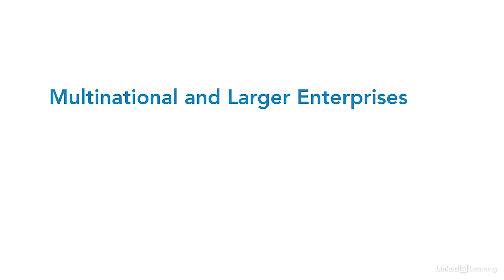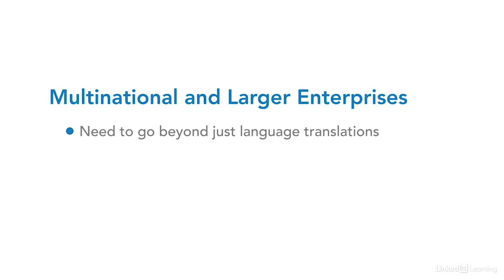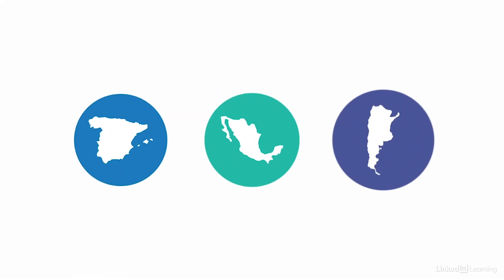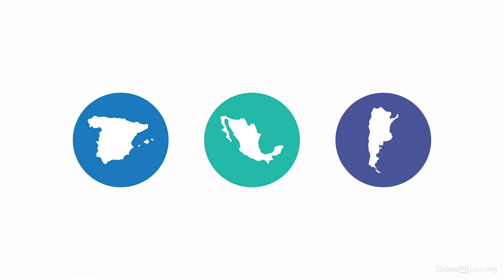For multinationals and large enterprises, however, we'll have to be able to accommodate more than just a translation of the same content into different languages. Often, there will be different offices operating in different countries with different business environments, and your optimization efforts will be spent making sure visitors can discover and consume that regionalized content in their local flavor of language. The Spanish spoken in Spain, for example, is very different from that of Mexico, and that's a very different Spanish from what's spoken in Argentina.